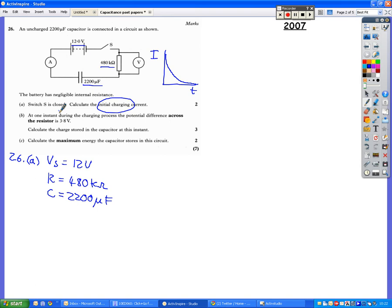That's wrong, because it says initial charging current, so what it means is this current here, that maximum value of current.